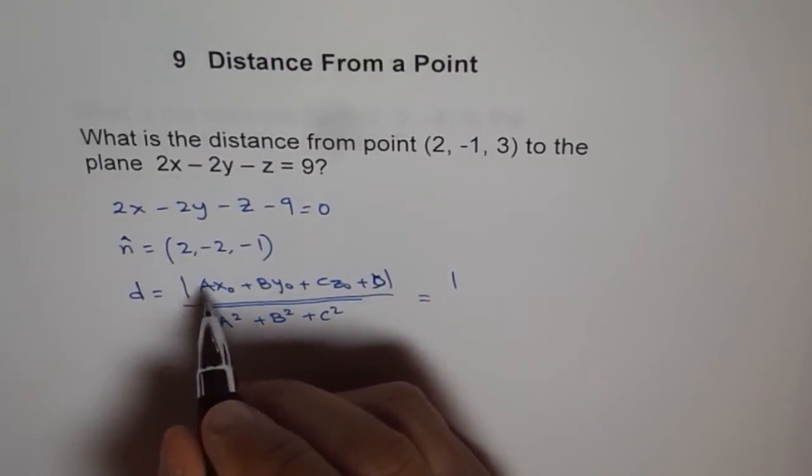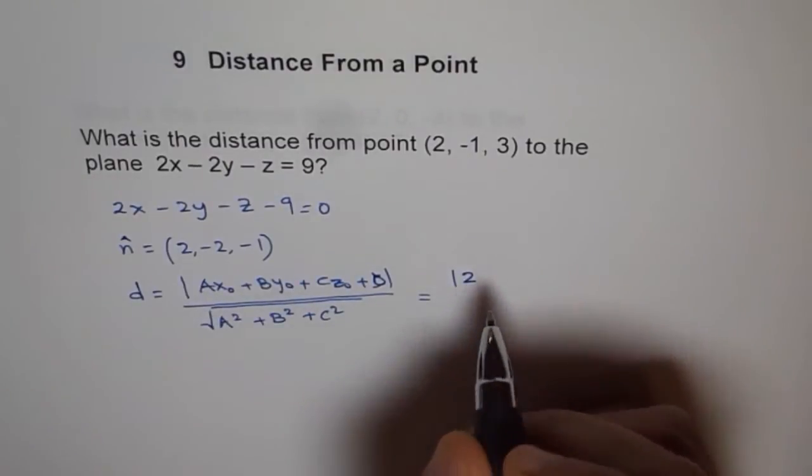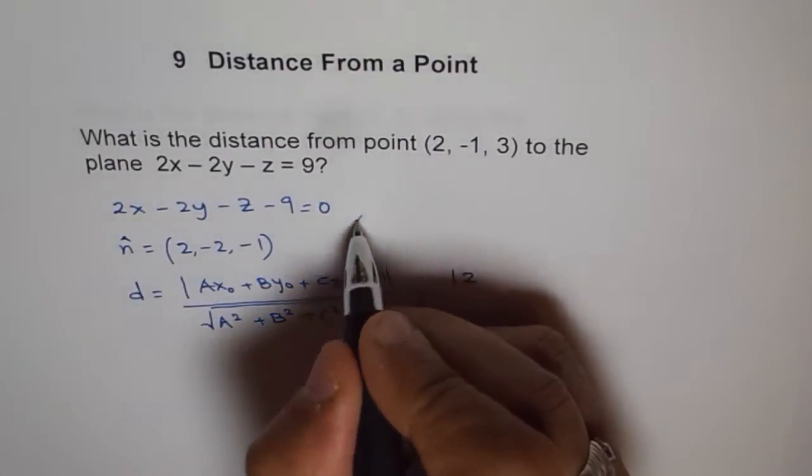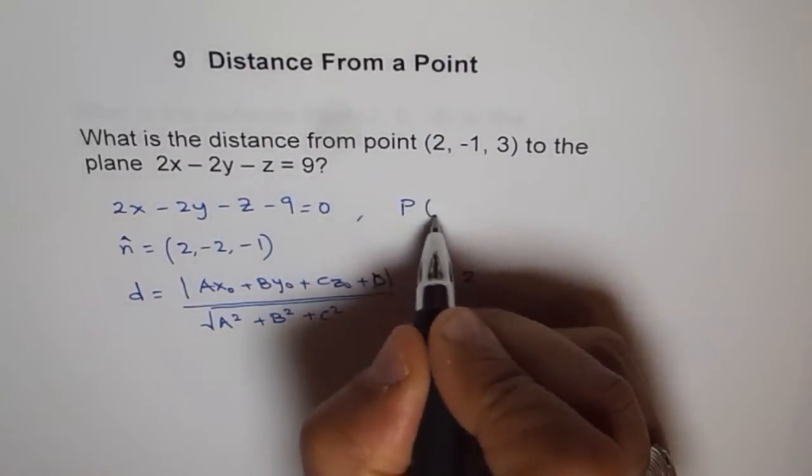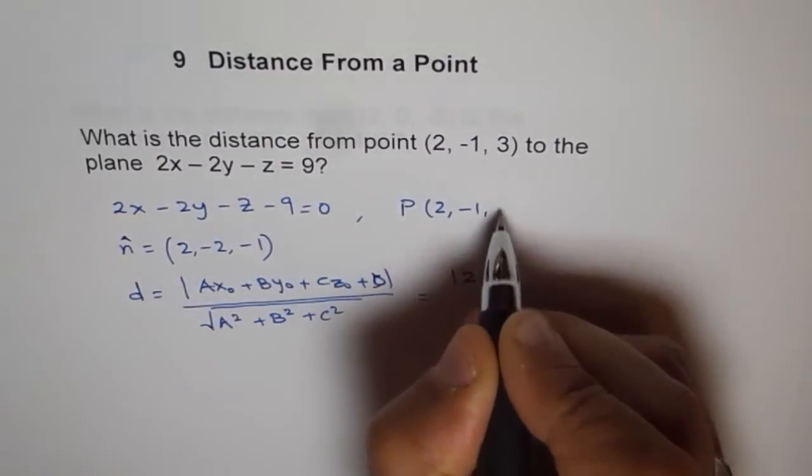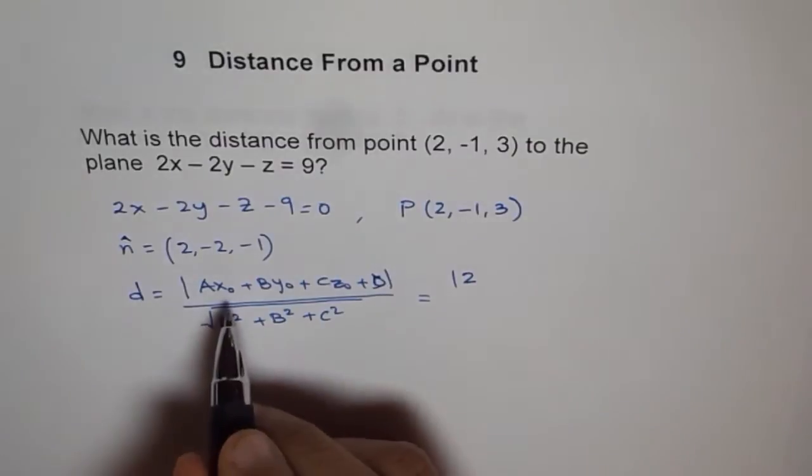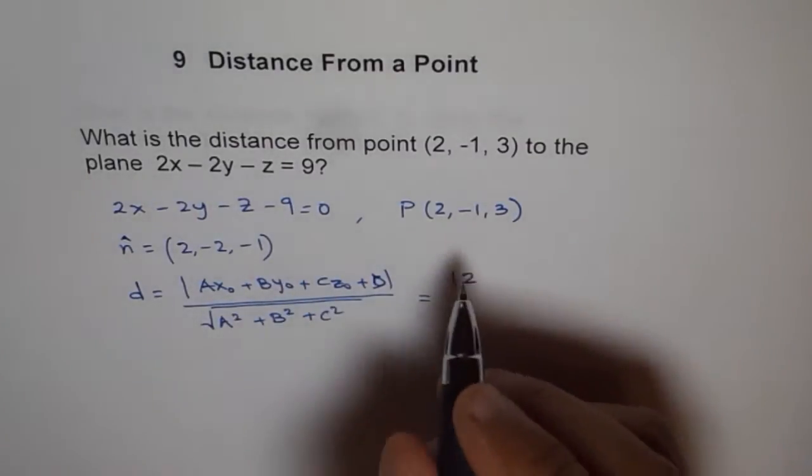We have A is 2. The point given to us is (2, -1, 3). These are the values x₀, y₀, and z₀.